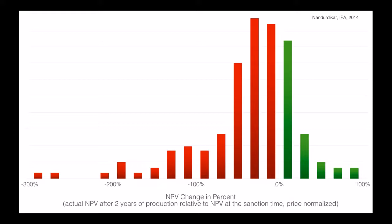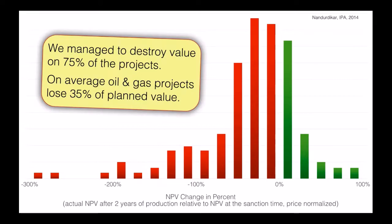What Nanderdekar is arguing in this paper is that we managed to destroy value on 75% of these projects. The average of this histogram is about negative 35%. So we seem to be struggling, across all these projects from all over the world, to deliver on our promises.